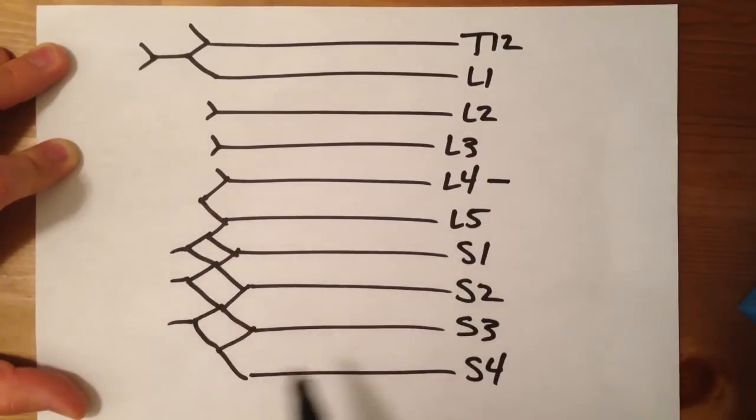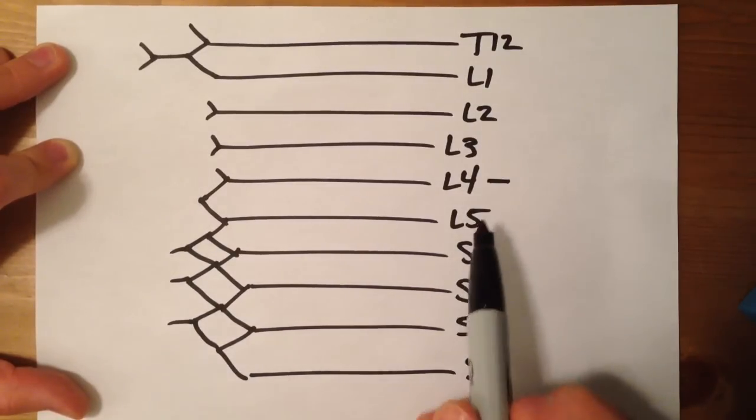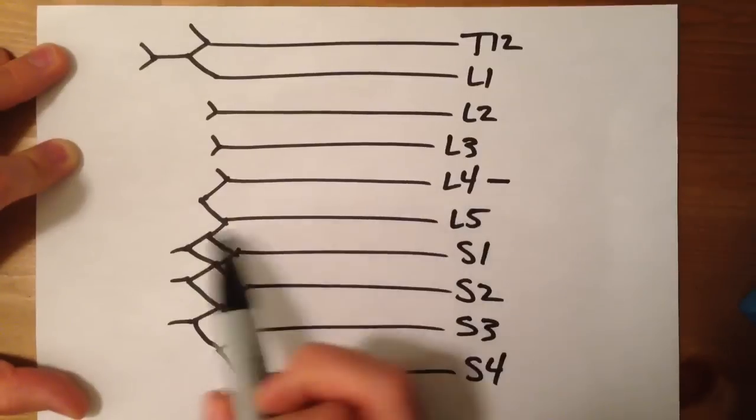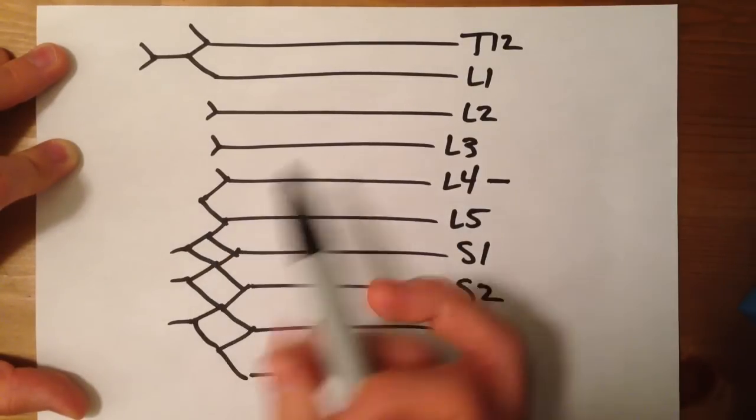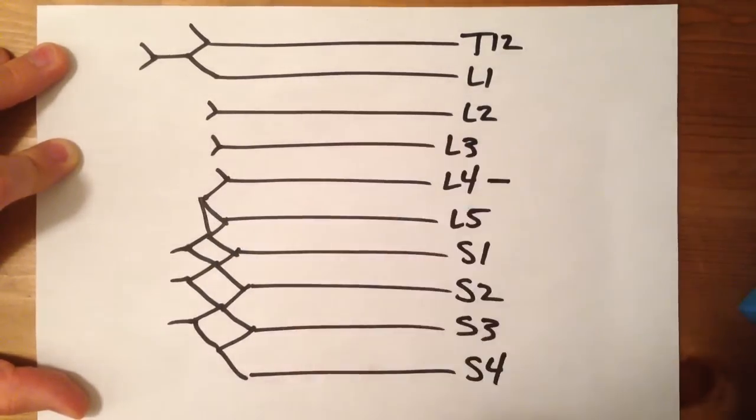These are all nerves, and we'll go over those in just a sec. From this L5 level to L4, we're going to connect that, and have a little branch come off.